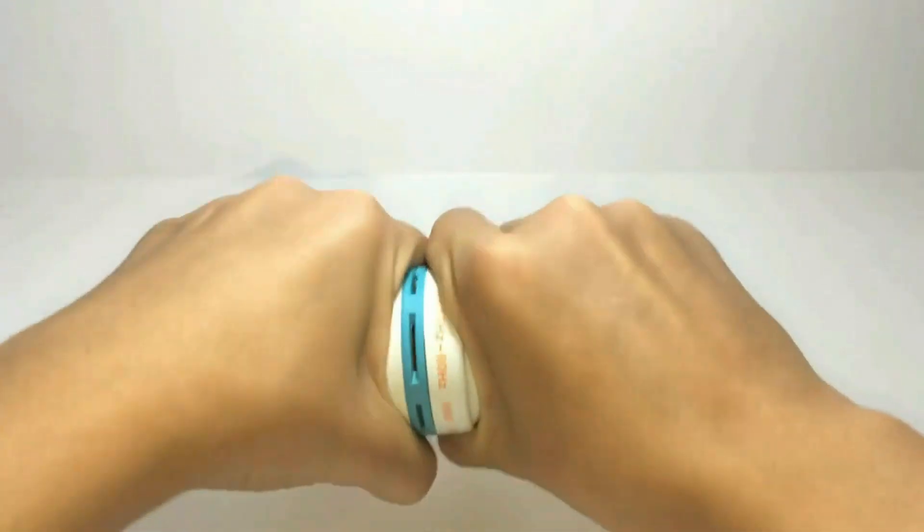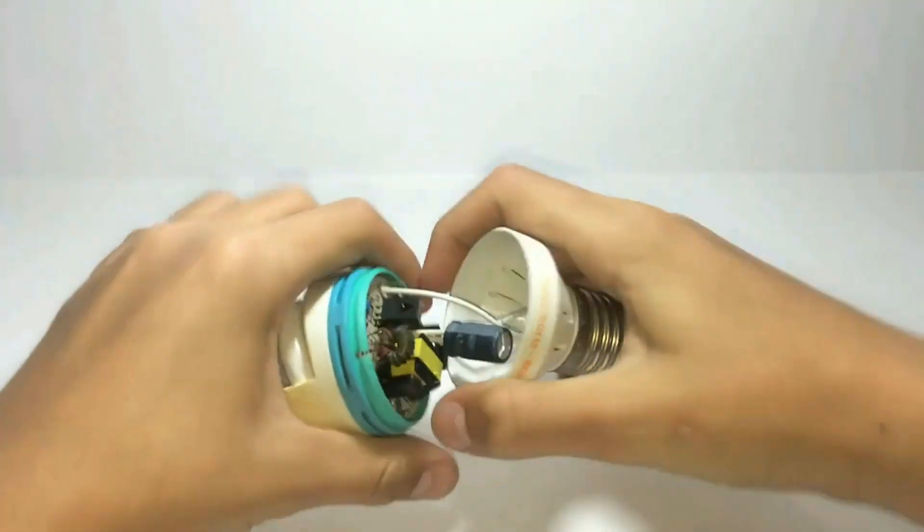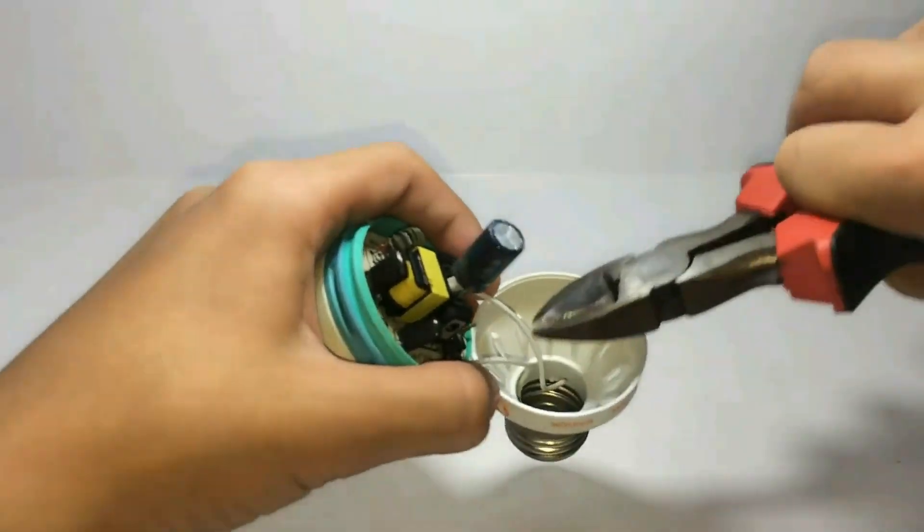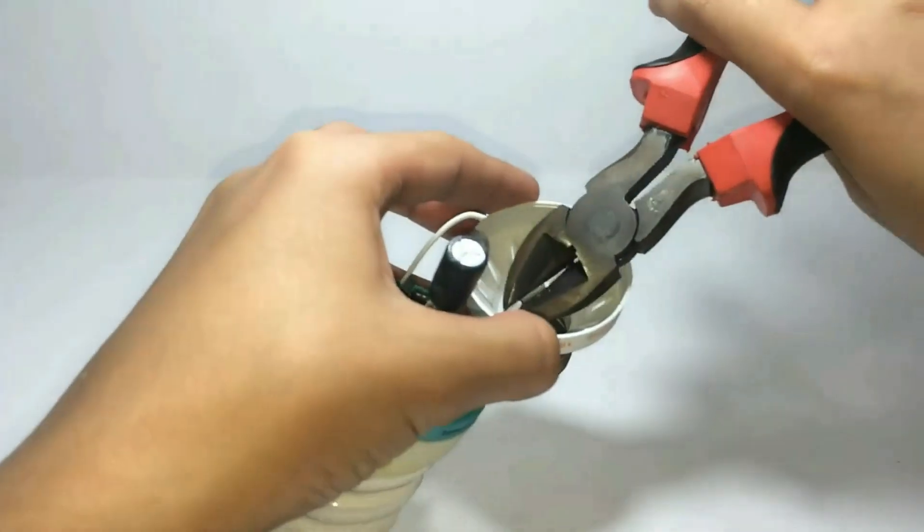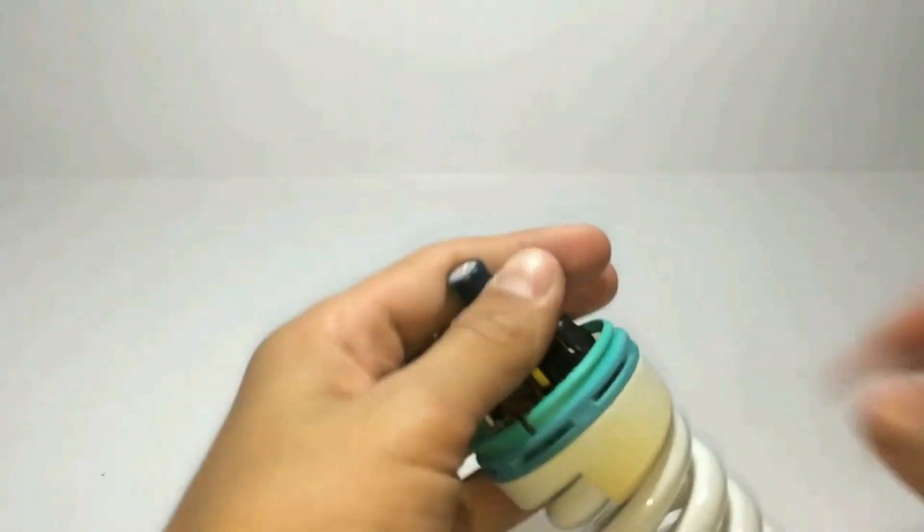Get an old CFL light bulb inside your house, open it up and cut the wires. After cutting the wires you have to bring the circuit out.